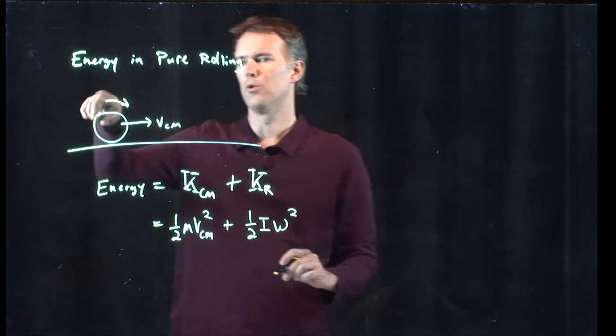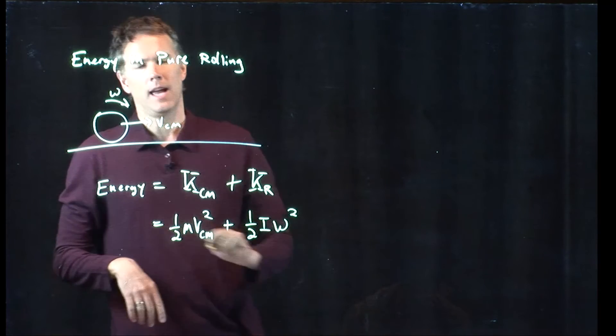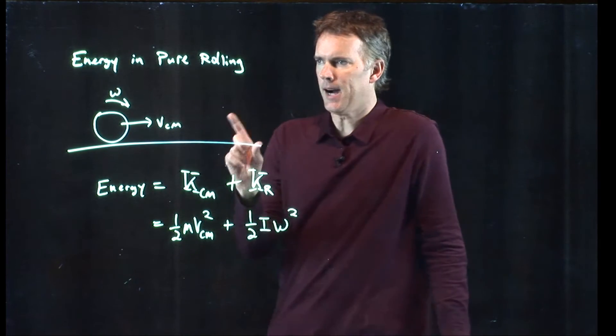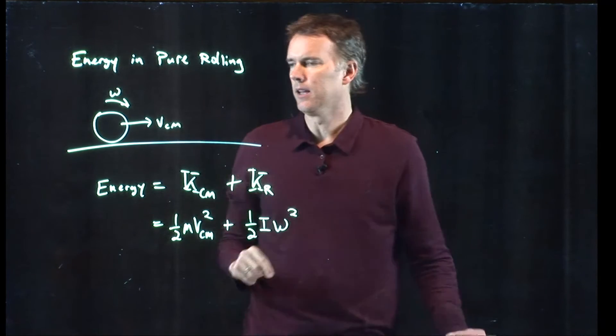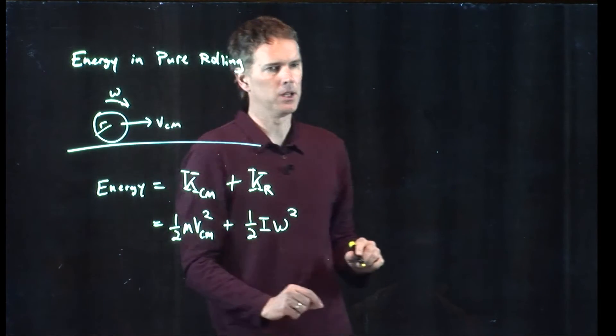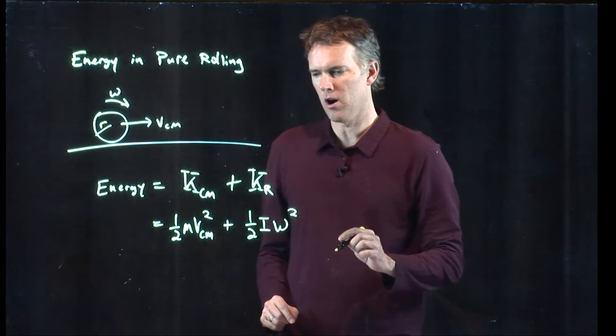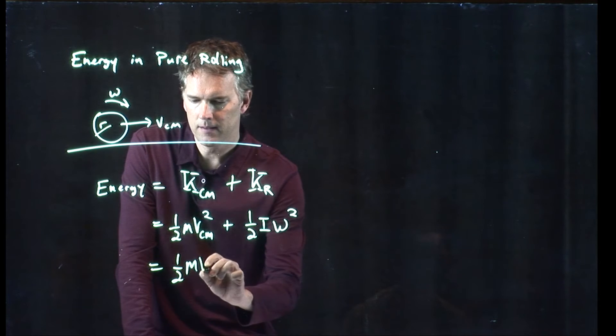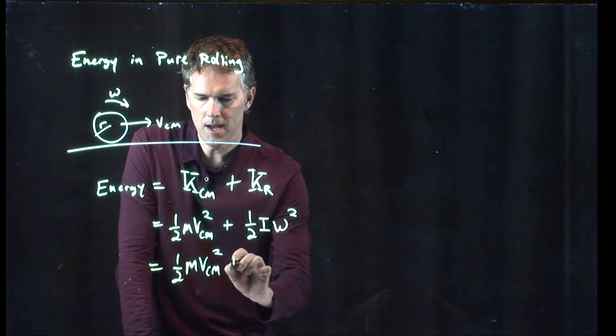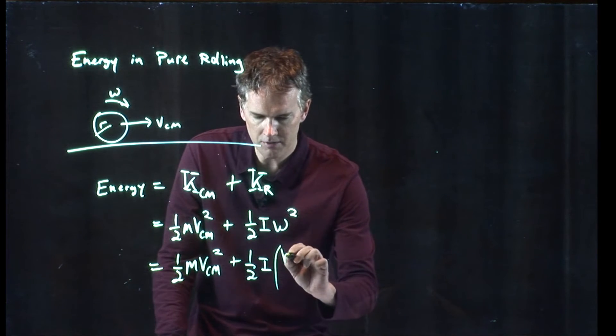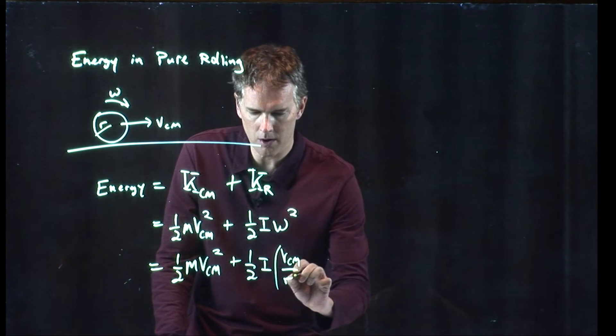This rotational angular speed is omega. But if you are pure rolling, there is a relationship between the two. Namely, if the wheel has radius r, then we know that omega is v_cm over r.